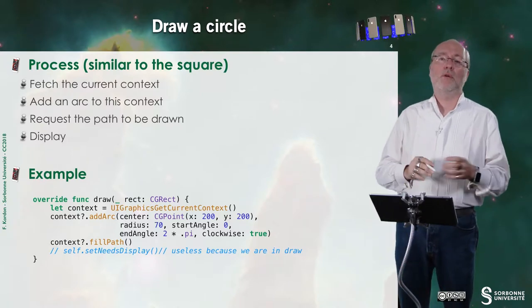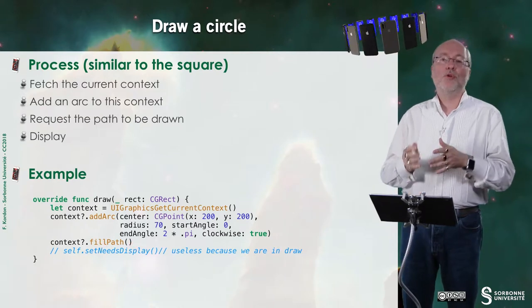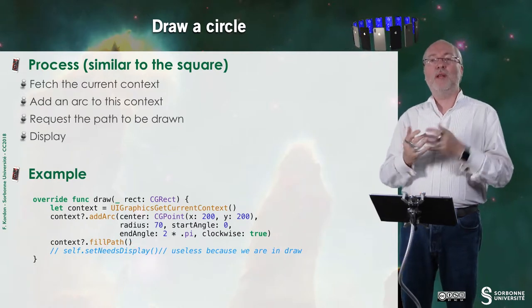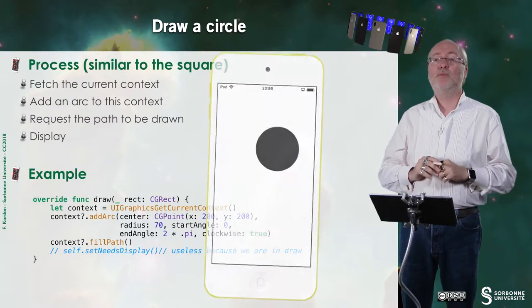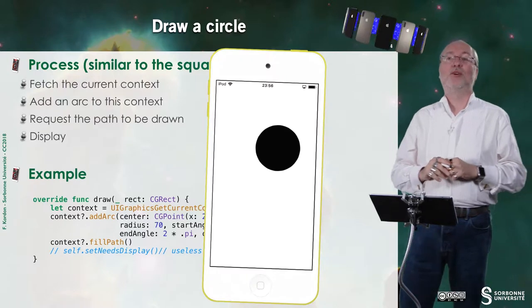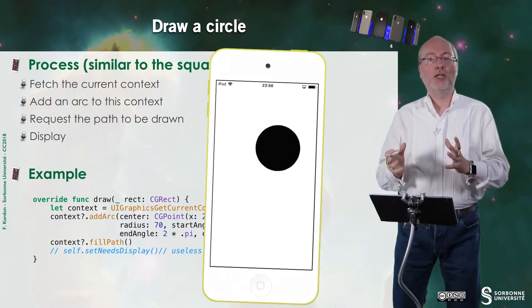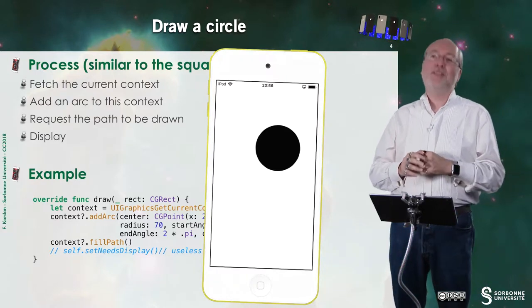And then I request the path here not to be stroked, but to be filled. So I will have the surface that is encompassed by this arc that will be drawn. And it provides you this on the device. It's ugly too, but it's still an example.